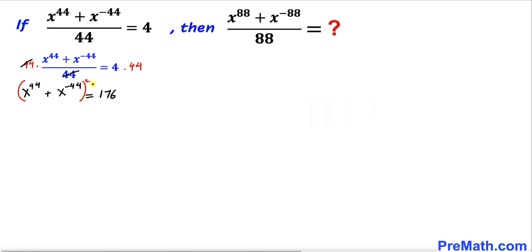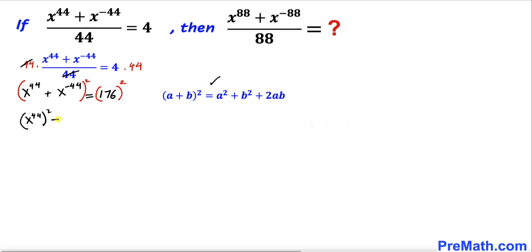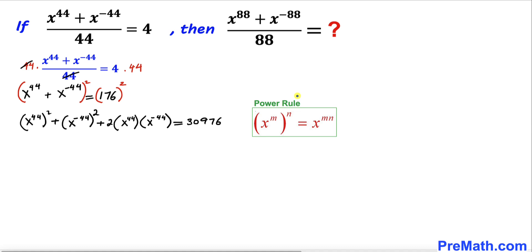I'm going to take a square on the left hand side and the right hand side as well. Let's recall the famous identity: (a + b)² = a² + b² + 2ab. Applying it on the left hand side, we get x^44 whole square plus x^(-44) whole square plus 2 times x^44 times x^(-44), equals 176 squared, which is 30976.